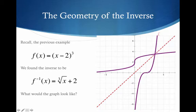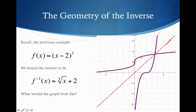Notice we have this x-intercept at 2. That x-intercept becomes the y-intercept in the inverse. In other words, we have the basic cube root function now shifted up two places. And we can see if you were to hold this dotted red line and just rotate or flip it — y equals x — we can see how the f function becomes the f inverse function. Every x, y coordinate flips.